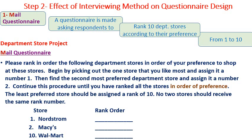Type number one: the questionnaire is sent to the respondent via mail. A questionnaire is made asking the respondent to rank 10 department stores according to their preference. The respondent is provided with a list of 10 department stores and asked to rank them according to their preference.